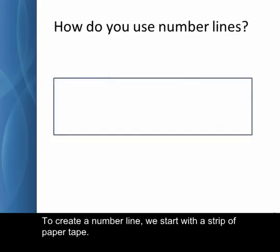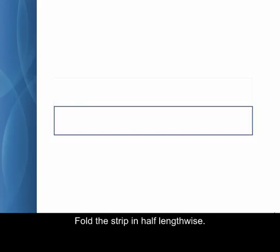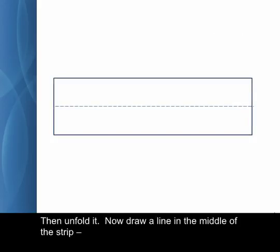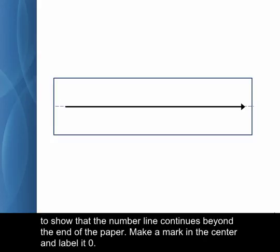To create a number line, we start with a strip of paper tape. A length of about three feet works well. Fold the strip in half lengthwise, then unfold it. Now draw a line in the middle of the strip. The crease should help you draw a nice straight line. You can put an arrowhead at the right end to show that the number line continues beyond the end of the paper.